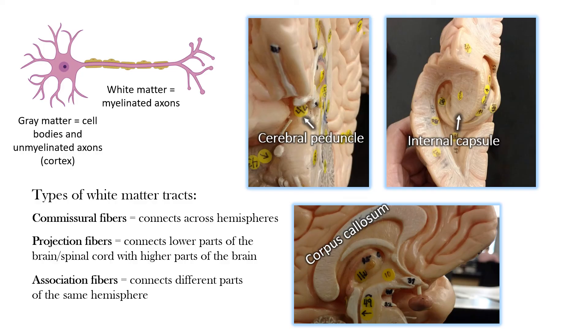Association fibers connect different parts of the same hemisphere. There aren't specific named examples visible on these models — they do exist, but it's a bit beyond a basic brain anatomy introduction. As always, I hope that was helpful — have a great day and have fun learning.